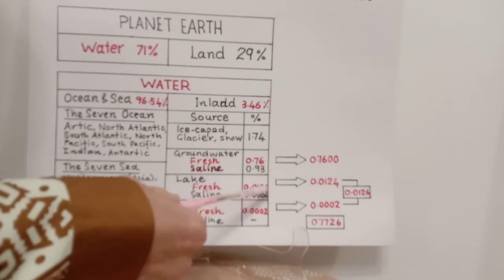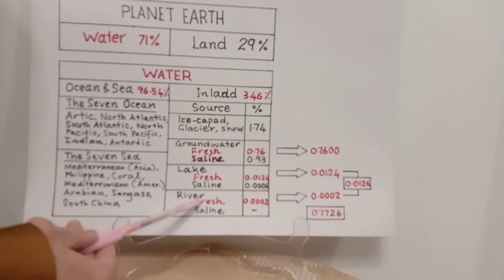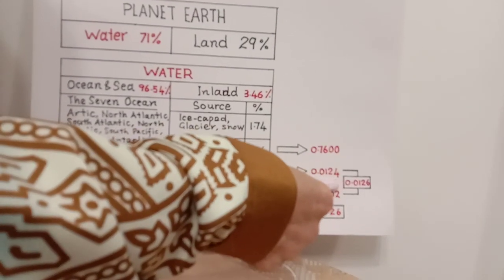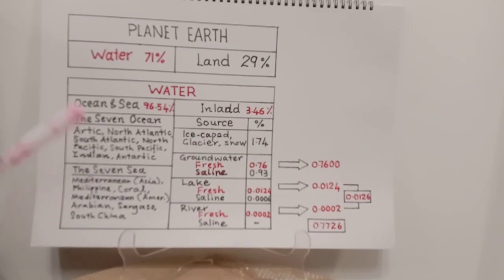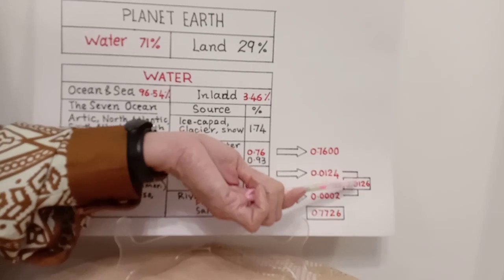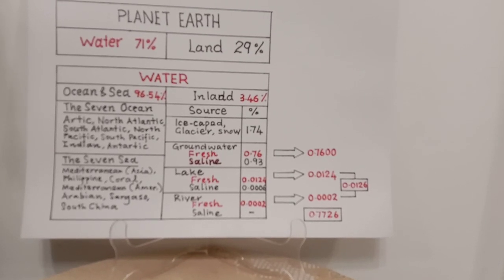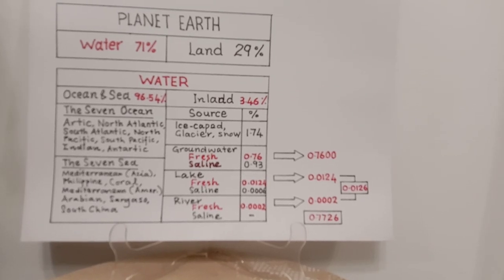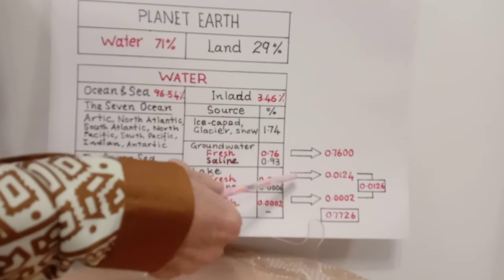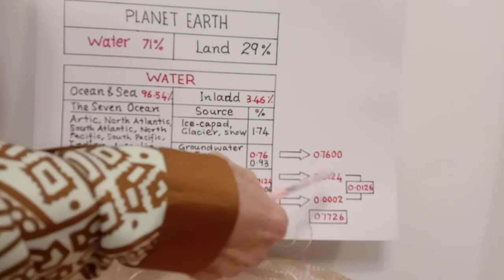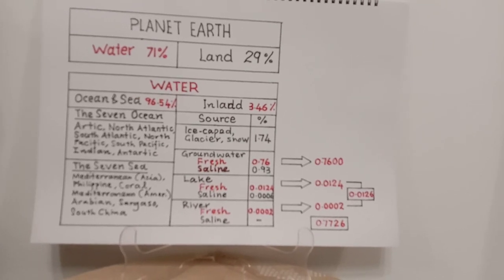If we add up the contribution from fresh lake water and fresh river water, they contribute 0.0126% of the total water of the world. In the simplest form, that is about 1.2 portions in every 10,000 portions of water. So from here, we can appreciate that even though water is abundant on our planet, the usable water to mankind and civilization is only just above 1 portion in 10,000.